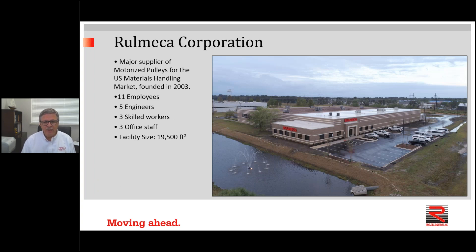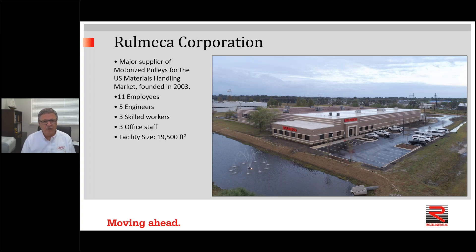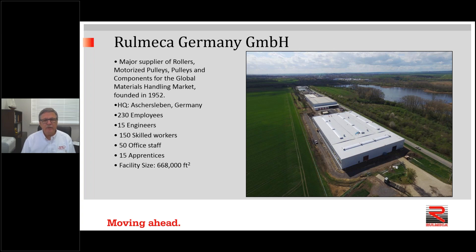Romeka Corporation, sponsoring this webinar, is located in Wilmington, North Carolina — our new facility as of last year in August. We have 11 folks here and five engineers on staff. Combined, our five engineers have over 100 years of experience in conveyor design technology. We are a major supplier of motorized pulleys for the U.S. materials handling industry. The center of excellence for motorized pulley production is the Romeka Germany plant in Aschersleben, Germany, which has over 200 employees and a facility of nearly 700,000 square feet — in operation since the early 1950s.